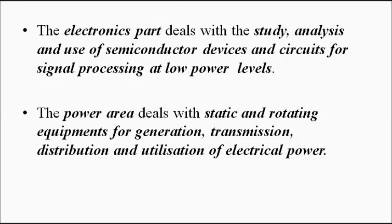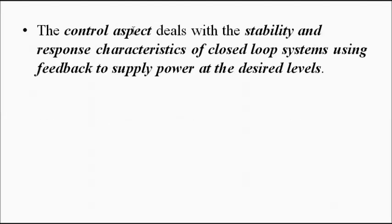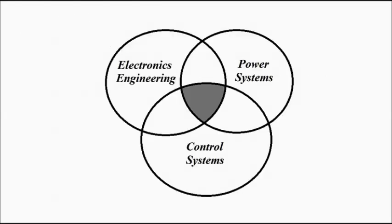The control system engineering aspect deals with employing a closed-loop feedback system to deal with the stability and response characteristics of the whole system, in order to achieve the desired power levels and supply power at the required level. So each of these disciplines contributes its own thing to this whole subject.